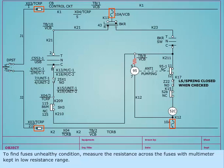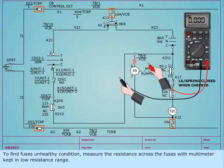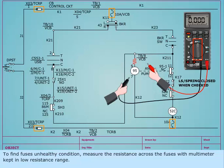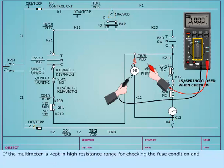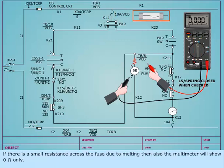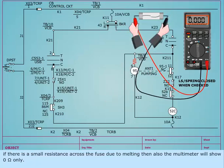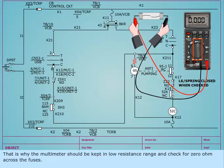To find fuses in an unhealthy condition, measure the resistance across the fuses with the multimeter kept in low resistance range. If the multimeter is kept in high resistance range for checking the fuse condition and there is small resistance across the fuse due to melting, the multimeter will still show 0 ohm only. That is why the multimeter should be kept in low resistance range to check for 0 ohm across the fuses.